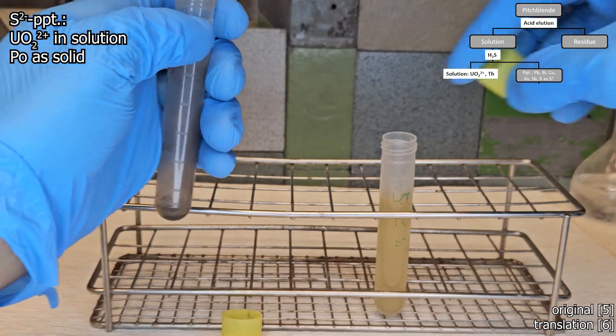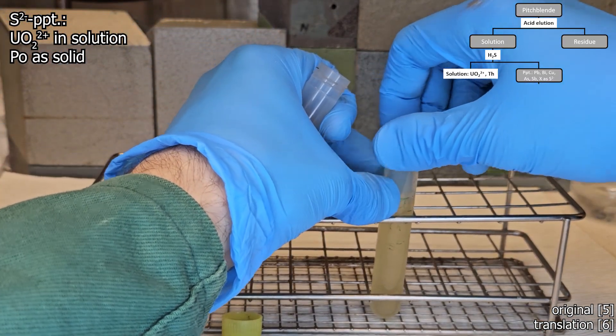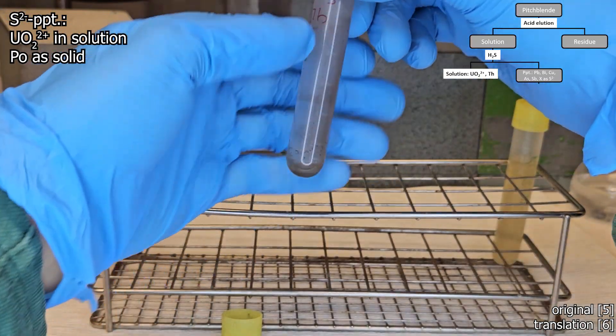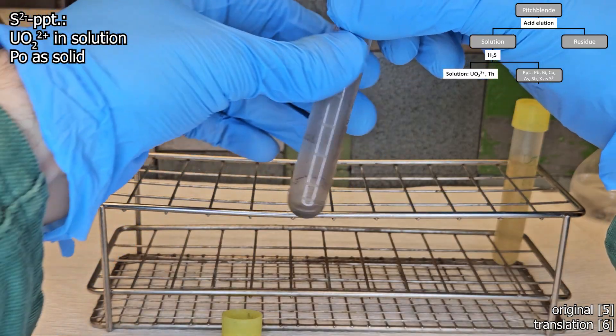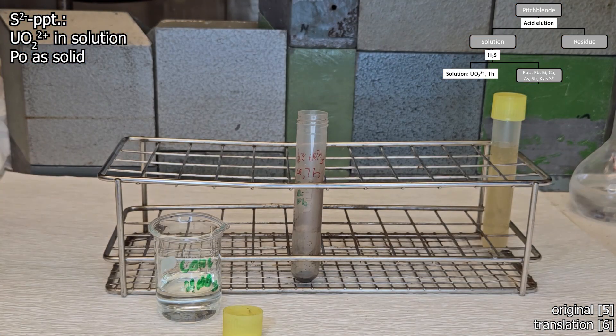Uranyl does not form poorly soluble sulfides, but everything else pretty much does. The yellow uranyl solution is decanted and saved for the next video. What remains is a mixed sulfide precipitate.